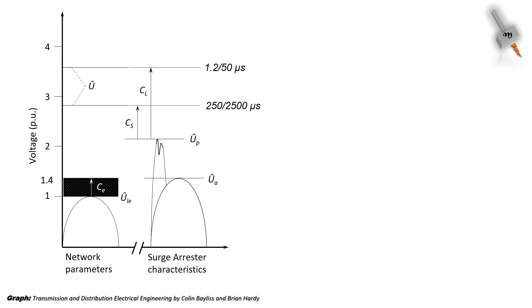Residual voltage of a lightning arrester defines the protection margin offered by the lightning arrester against the system BIL.